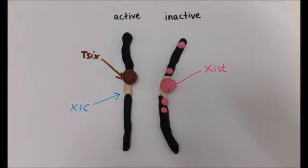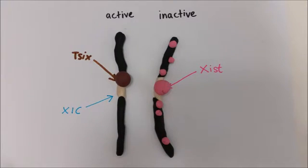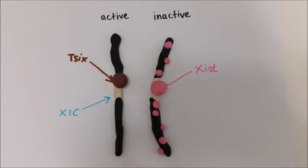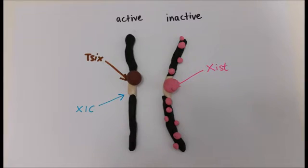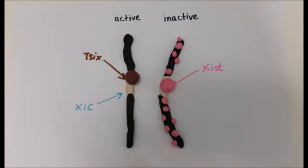Xist then begins to coat the chromosome in cis, initially targeting gene-rich domains and later gene-poor regions. This coating establishes the inactive state.